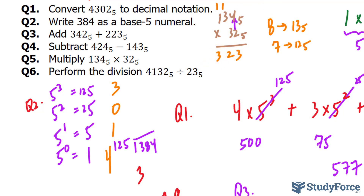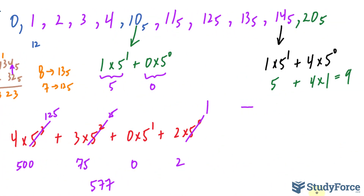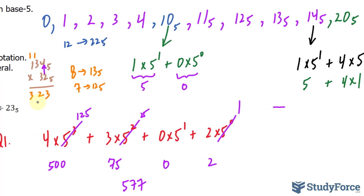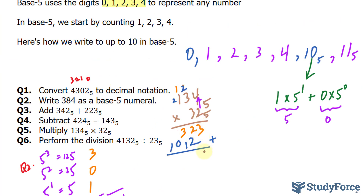Next, 3 times 4 is 12. In base 5 notation, 12 is 22 sub 5, so we place the 2 here and carry 2. 3 times 3 is 9 plus 2 is 11, which is 21 sub 5, so we write down 1 and carry 2. 3 times 1 is 3 plus 2 is 5, and since we can't write down 5, we write 10. Adding everything up, the product is 10,443 sub 5.